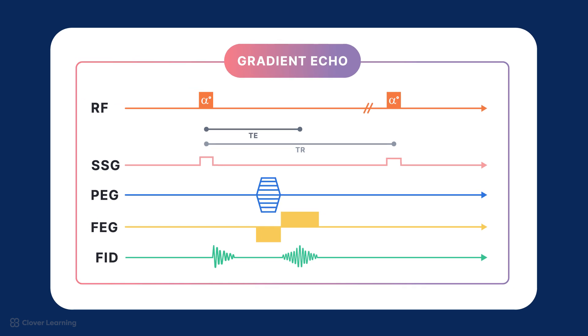Gradient echo sequences are identified by the absence of an RF rephasing pulse and shorter echo times depicted on the diagram. They are faster and used when examining properties like blood flow or dynamic processes within the body. Gradient echo sequences differ by using a variable angle excitation pulse and replace the rephasing pulse with a manipulation of the pulse from the FEG.